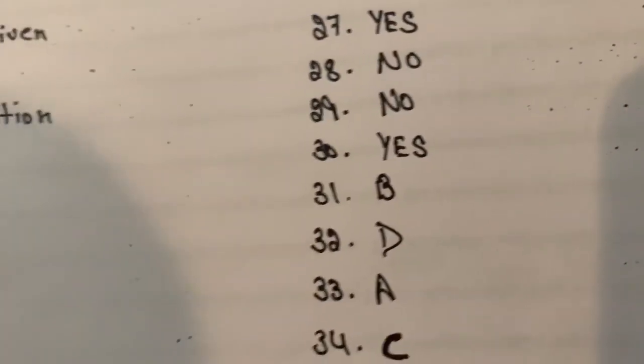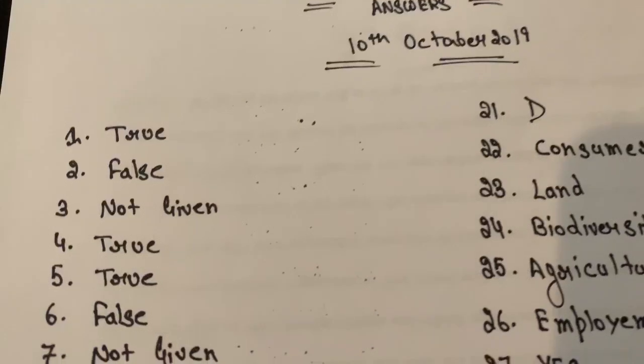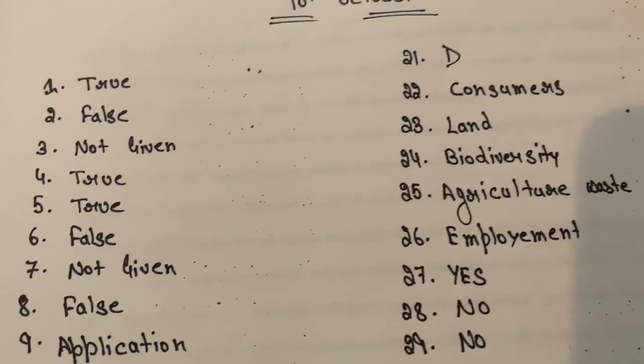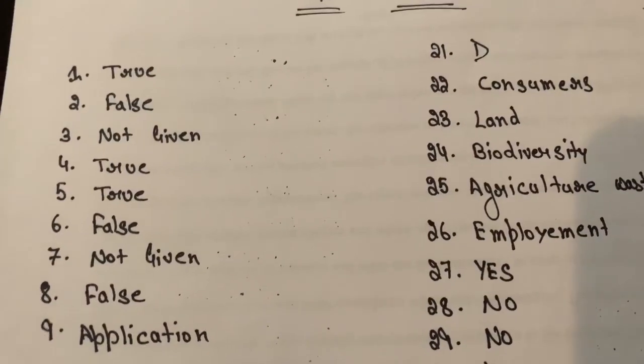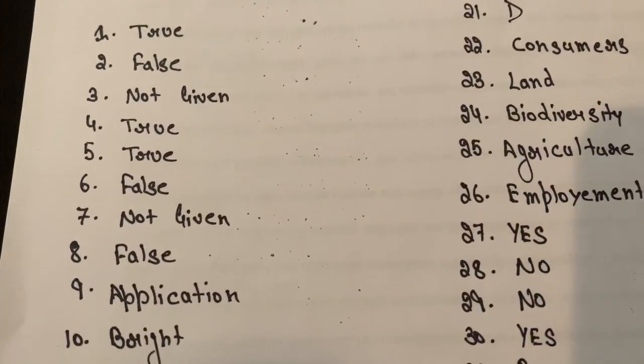These are the reading answers. If you have the 31st to 40th reading answers, you can share with us because it will help other IELTS candidates. You can match your reading answers because most probably these are the accurate answers, as he was very sure about his reading.